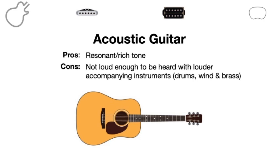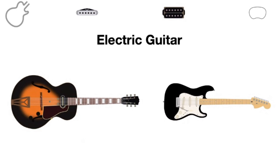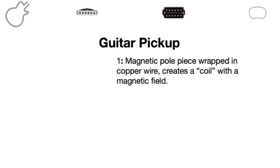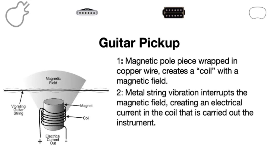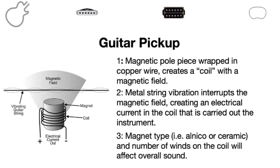These steel string acoustics have a really rich, resonant tone — great for playing solo, maybe playing along with another guitarist or backing a singer. But as soon as you add accompanying instruments, that guitar is going to be drowned out. So the solution was to amplify it by adding a pickup to the guitar. We first see this on hollow body and arch top style guitars, usually with a single pickup in the neck. Later we get solid body style guitars, usually with two or three pickups. A guitar pickup is a magnetic pole piece wrapped in copper wire that creates a coil with a magnetic field. As the metal string vibrates, it interrupts that magnetic field, creating an electrical current which gets reproduced as sound from your amplifier. The magnet type and number of windings of the coil will also affect your overall sound.